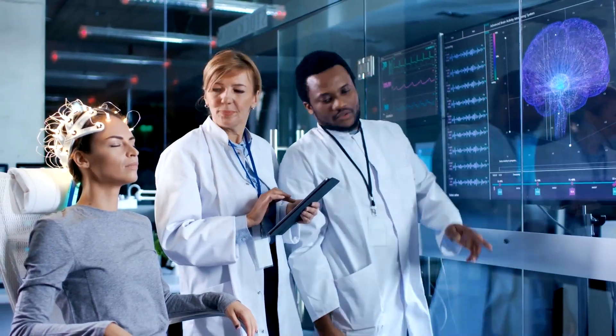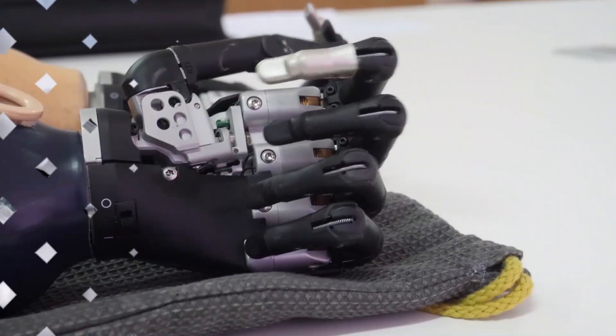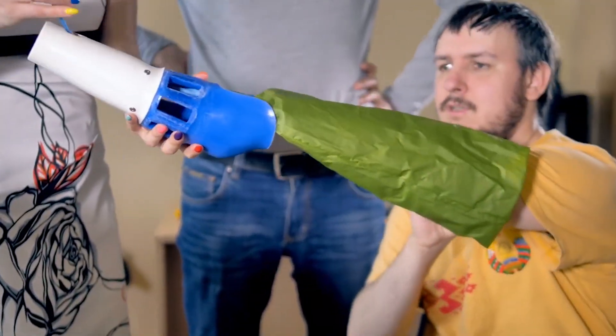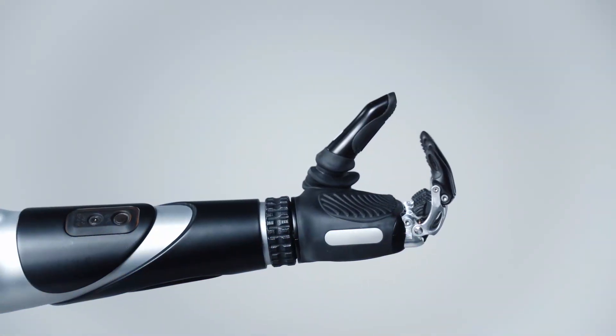Recent years have seen significant progress in prosthetic arms due to groundbreaking discoveries in neuroscience, material science, and robotics. These state-of-the-art tools improve the lives of those who have lost limbs by restoring functioning. The remarkable adaptability and functionality of contemporary prosthetic limbs is one feature that makes them stand out.